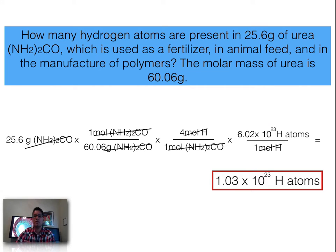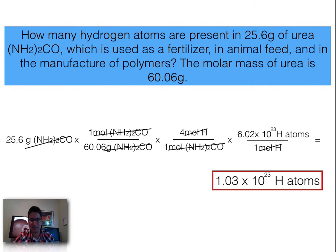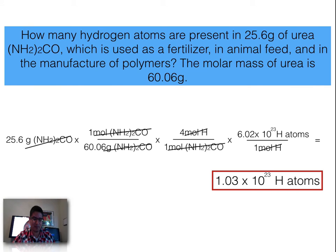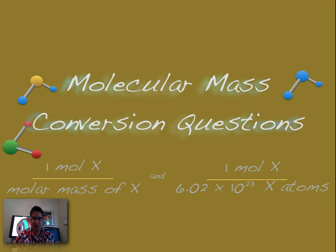So in 25.6 grams of urea there are 1.03×10²³ hydrogen atoms. Feel free to rewind and rewatch that portion — problems like this tend to be more challenging, so go back and review if needed. That does it for this video on molecular mass conversion questions. Good luck in your studies!